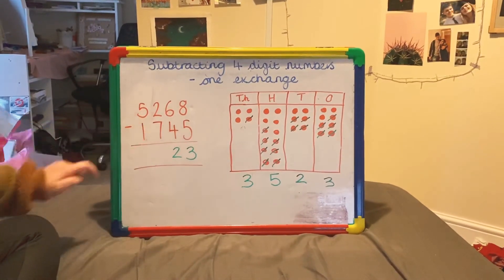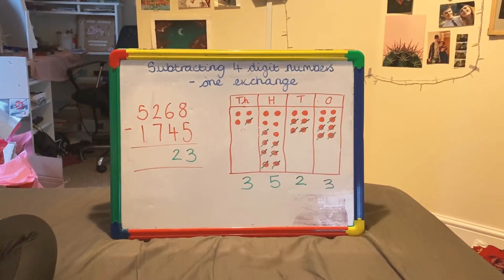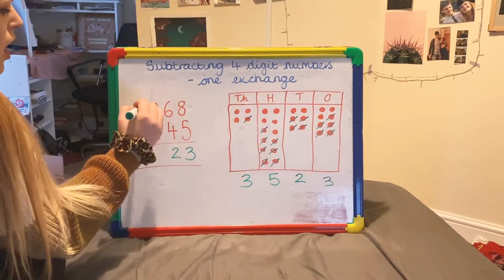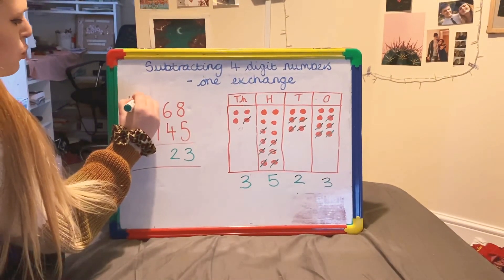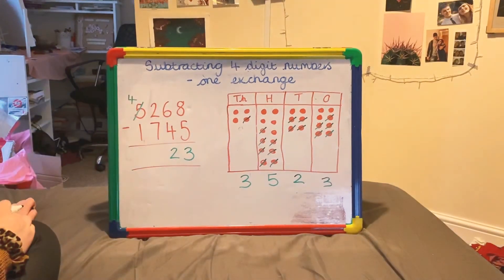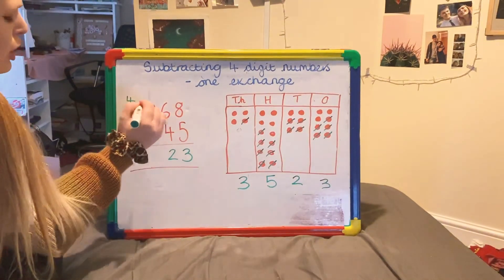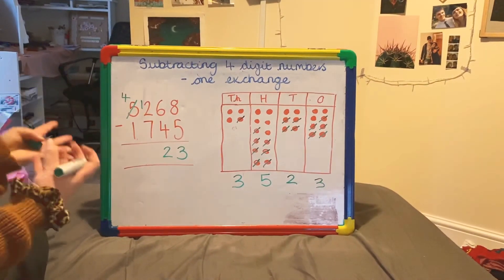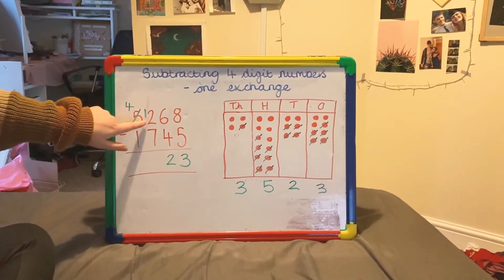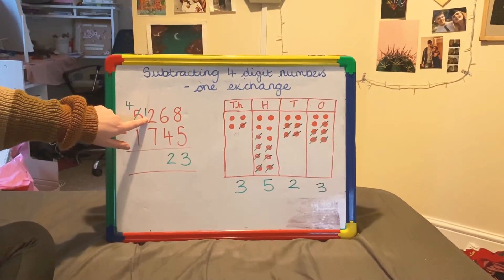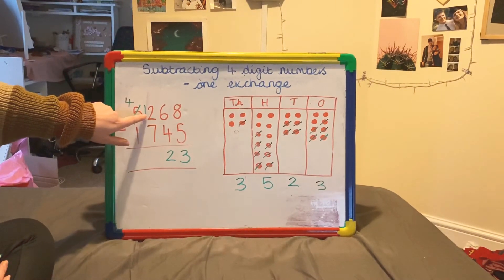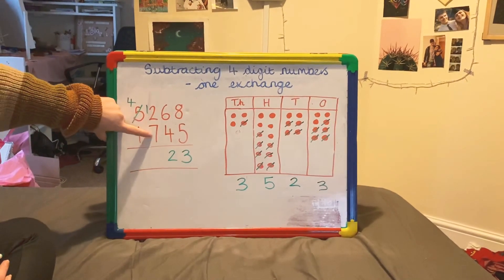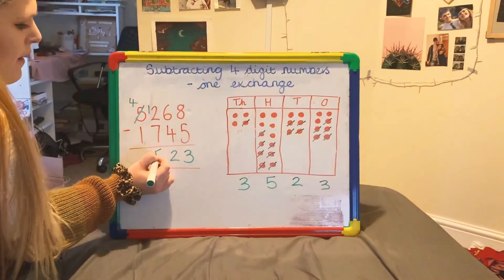Next is when we move on to our trickier part, our hundreds column. Just like we did in our place value chart, we are going to take our 5,000, exchange one of those 1,000 counters and give it to the hundreds column. So I have 4,000 left here because we've taken one of those thousands away and exchanged it — swapped it for 10 hundreds. So if I put that 1 in front of the 2, that is 12 hundreds I now have in that column. So 12 take away 7, my answer is going to be 5.